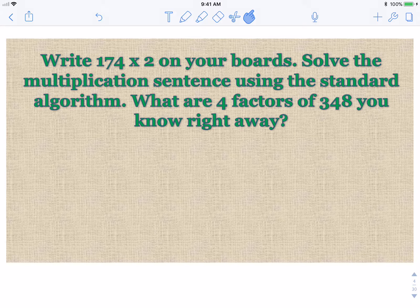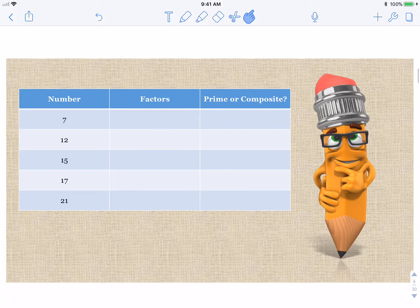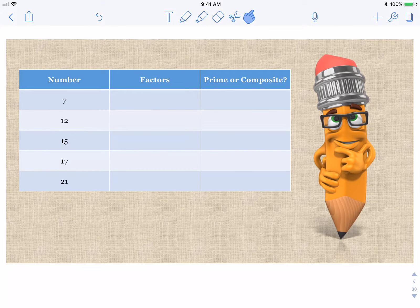Those are four factors that I know right away because I know that one is always a factor. One and the number itself. Those are always two factors. So I'll go ahead and solve. See if you get 348. One and 348, two and 174 were the four factors that you should have written down.